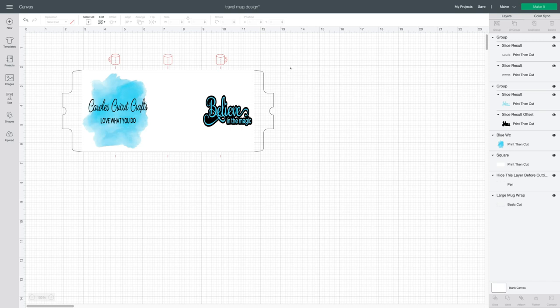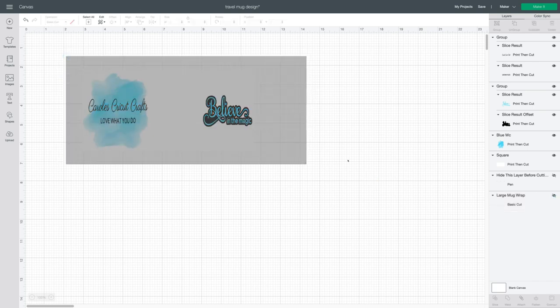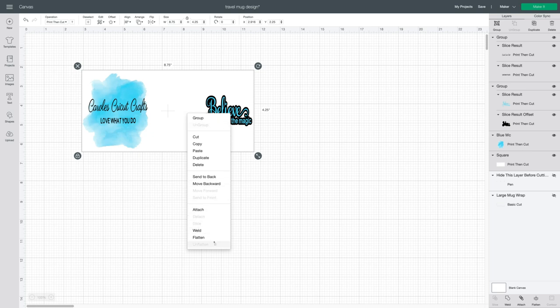You can see that I've already set up my design. I won't need these guidelines so I'm going to hide them in my layers panel. I will select all together, right click and flatten.